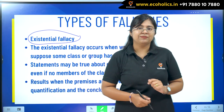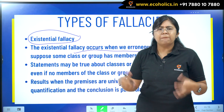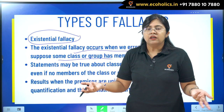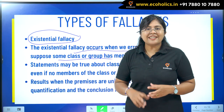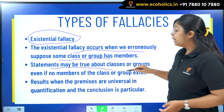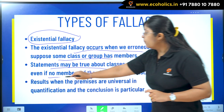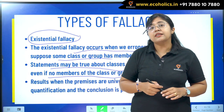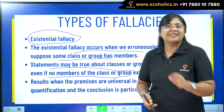The existential fallacy occurs when we erroneously — by mistake — suppose some class or group has members. Statements may be true about a certain class or group, which is essentially a subject or predicate in a sentence, and even if no members of that class or group exist, the premise will still be true. However, we cannot say the same thing about the conclusion. This is hard to understand from the definition alone, so let's jump to the examples.